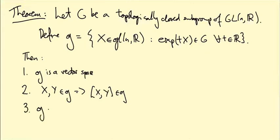Third, little g is parallel to the tangent space of G at the identity matrix. That's more or less how we're going to prove one and two, actually.